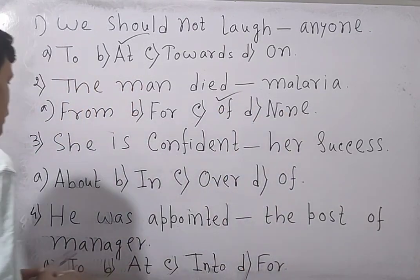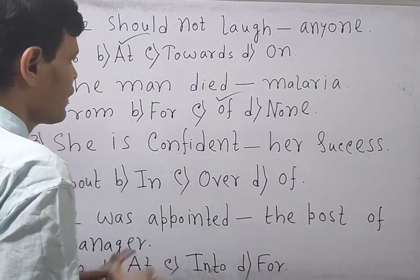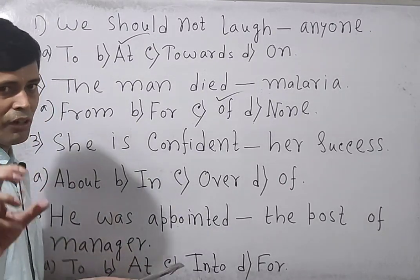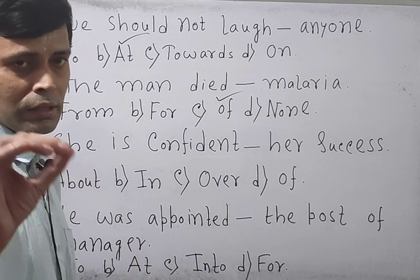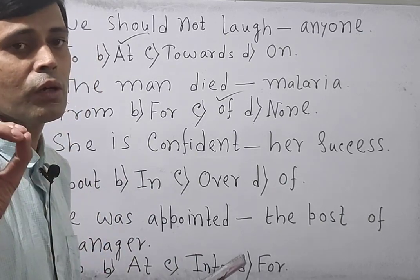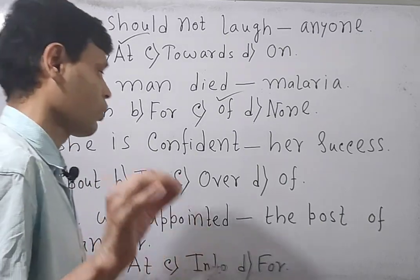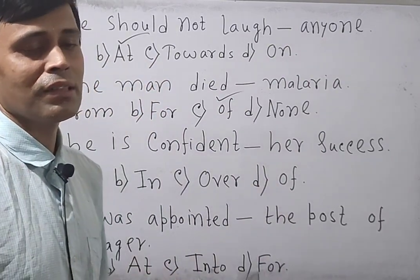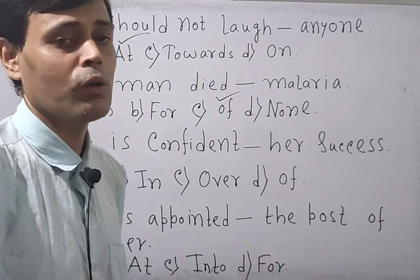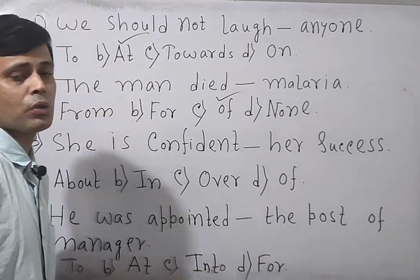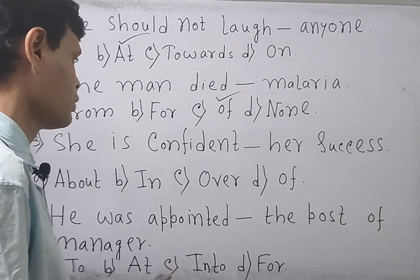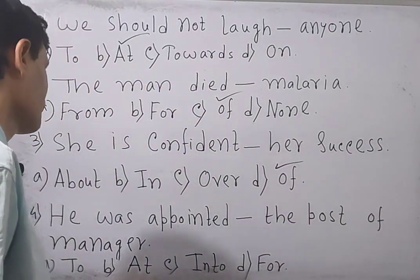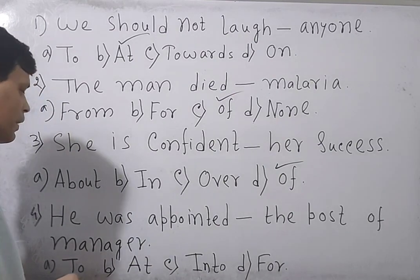Next: 'She is confident ___ her success.' The options are: off, over, in, of. The first choice is 'off,' the second is 'over.' When 'off' is present among the options, there is no need to consider any other preposition. So the right answer is 'off.'